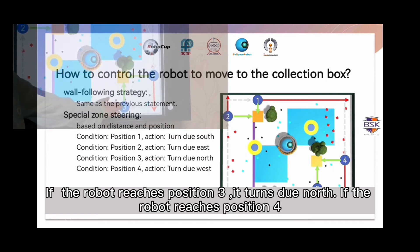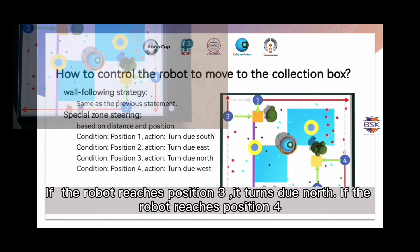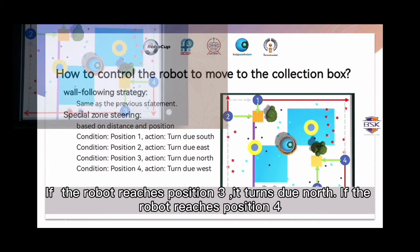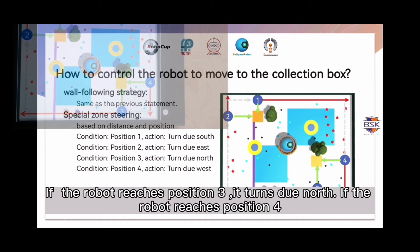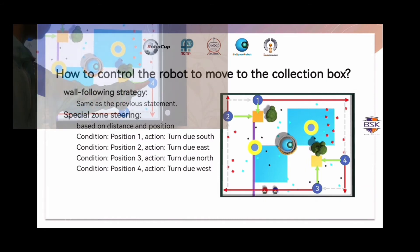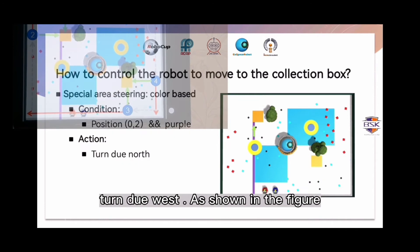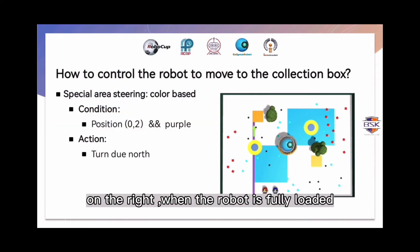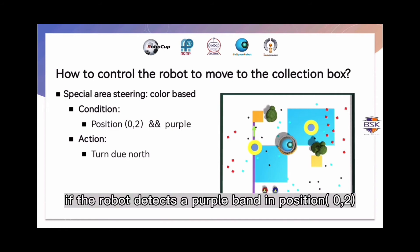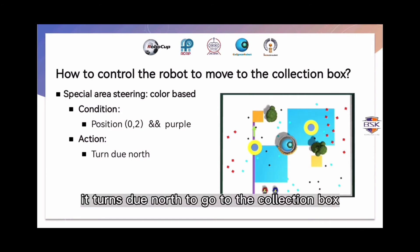If the robot reaches position 3, it turns north. If the robot reaches position 4, it turns west. As shown in the figure on the right, when the robot is fully loaded, if the robot detects a purple band in position 02, it turns north to go to the collection box.